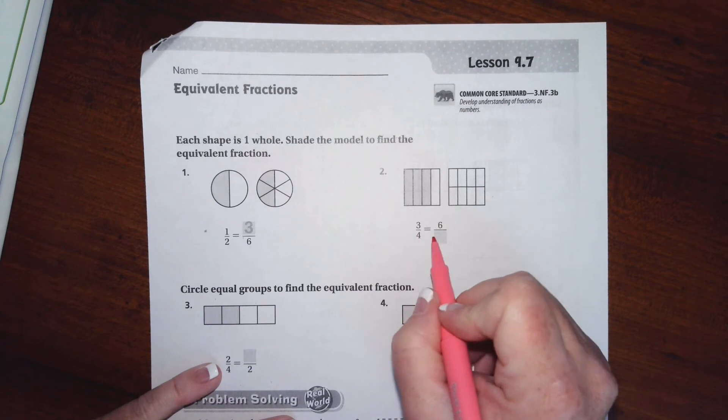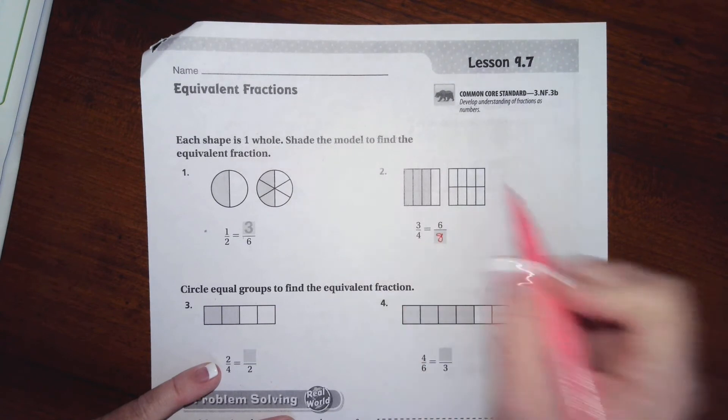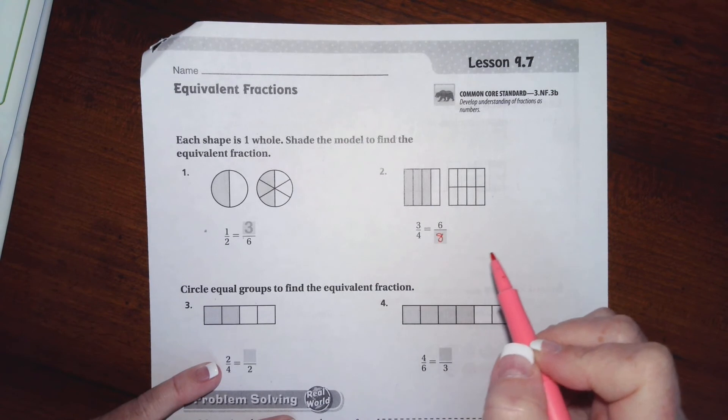Three times what is six? Well, three times two is six, so then four times two is eight. And if you count these, there are eight of them.